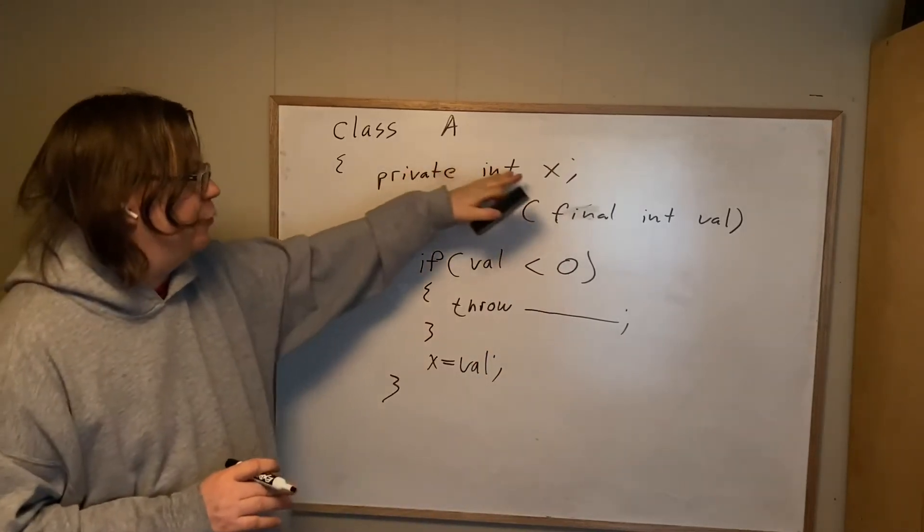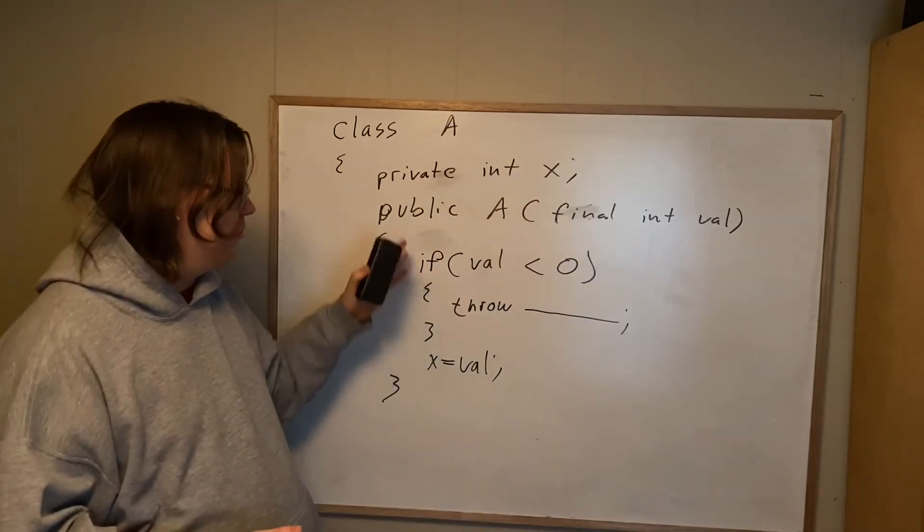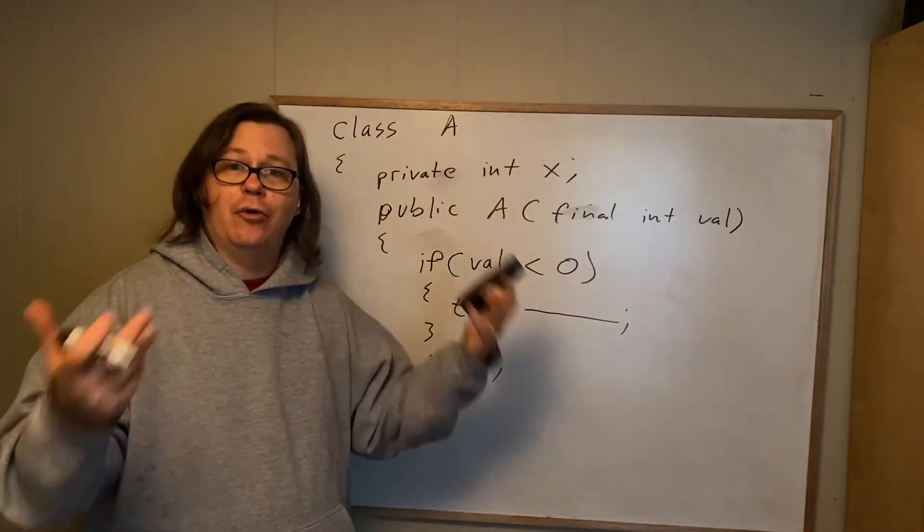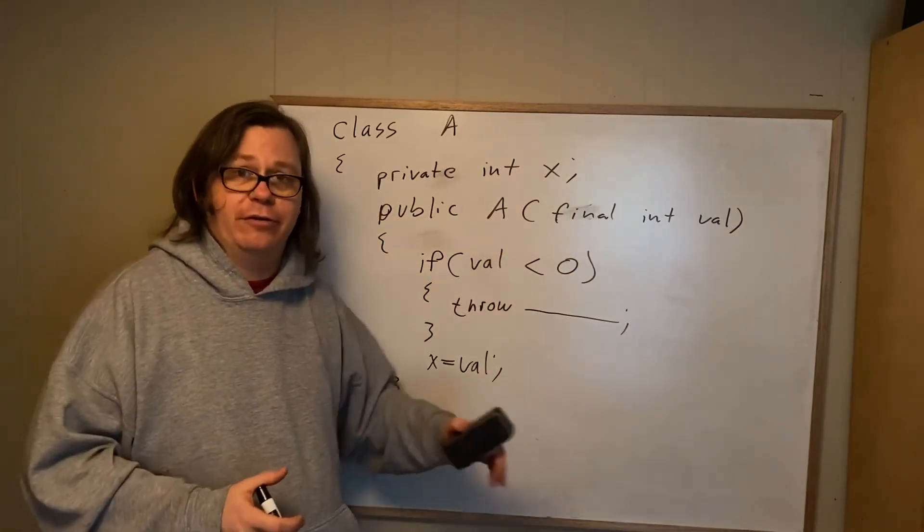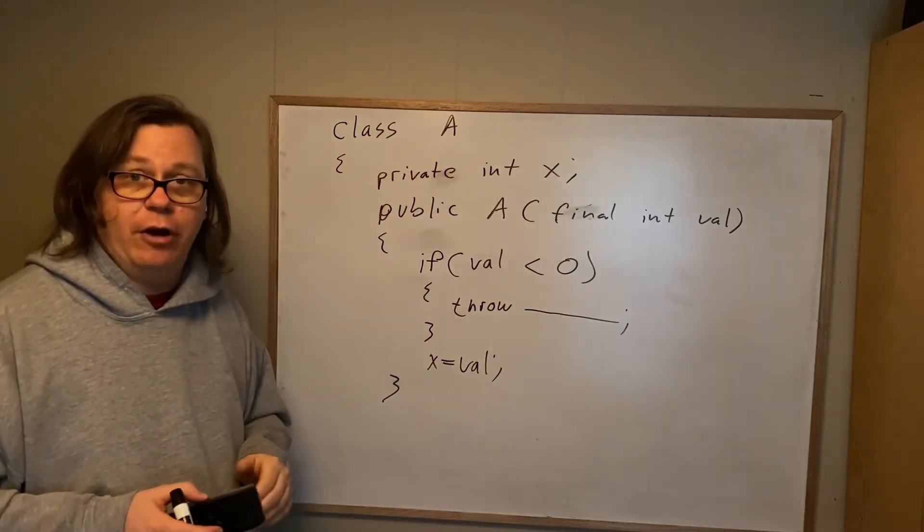So it lets us create, so new creates the object, the constructor lets us initialize the object, and it gives us a chance to validate that the object is correct by the time it's finished the constructor. So that is the real purpose of the use of a constructor to properly initialize an object.